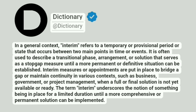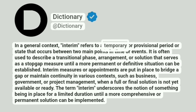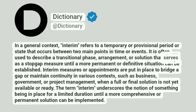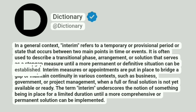Dictionary. Addictionary. In a general context, interim refers to a temporary or provisional period or state that occurs between two main points in time or events. It is often used to describe a transitional phase, arrangement, or solution that serves as a stopgap measure until a more permanent or definitive situation can be established.